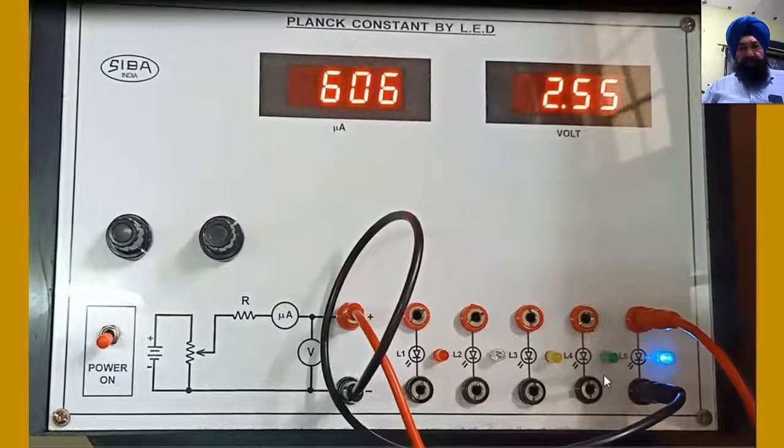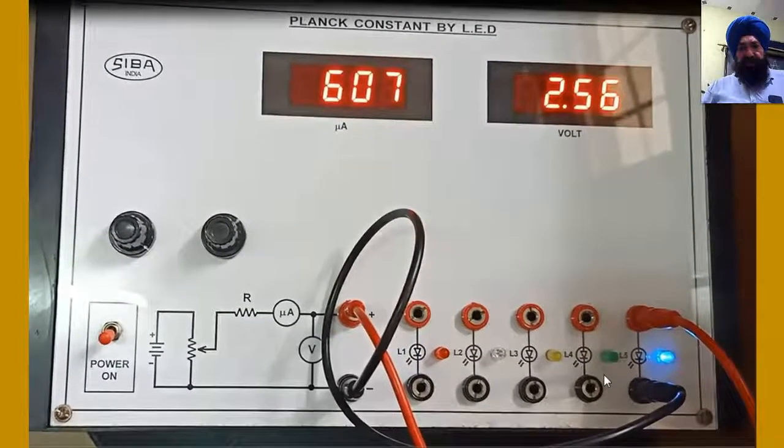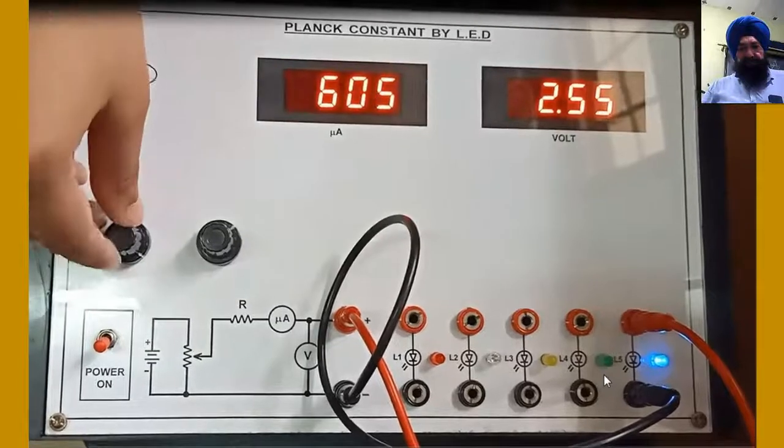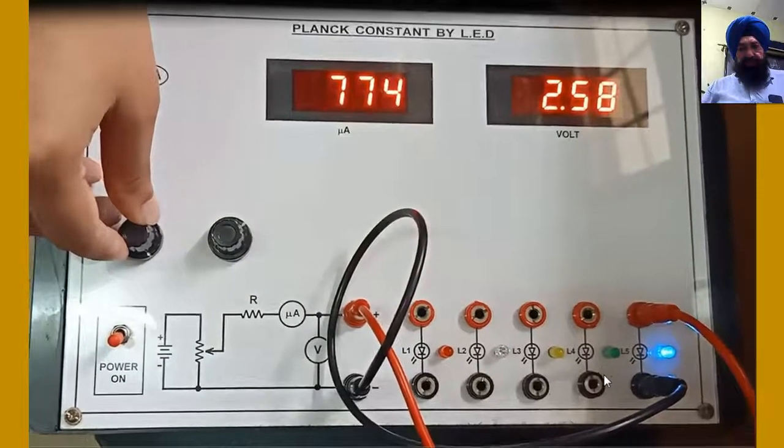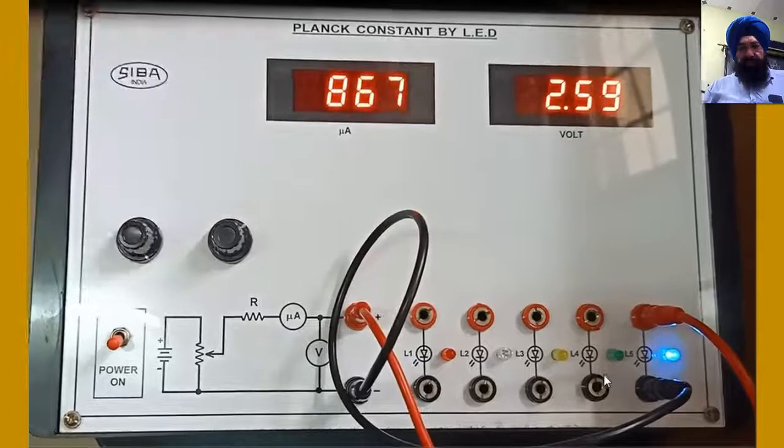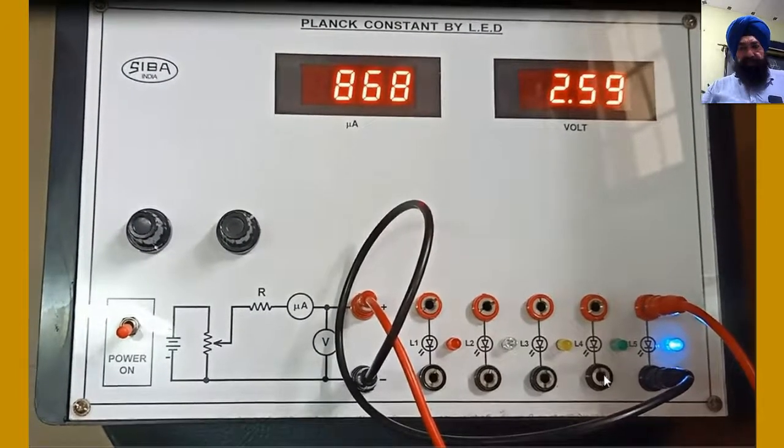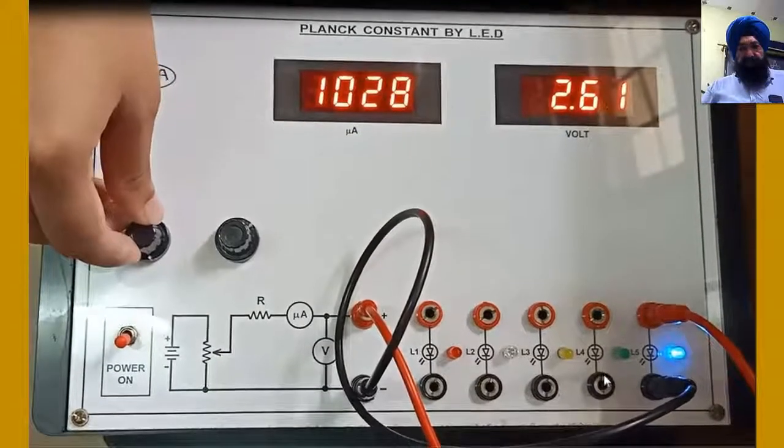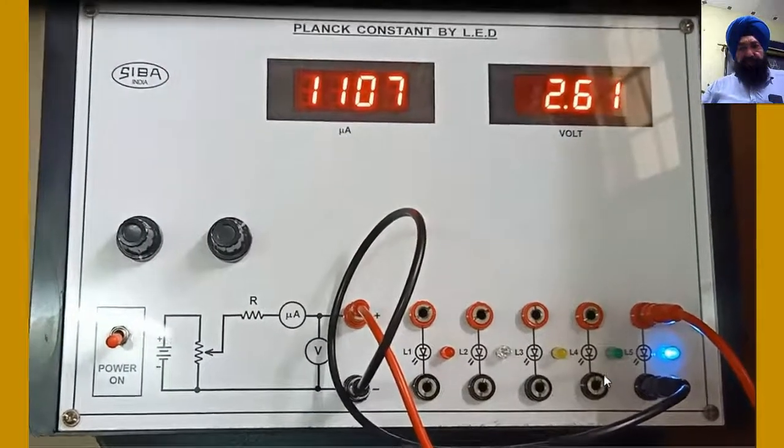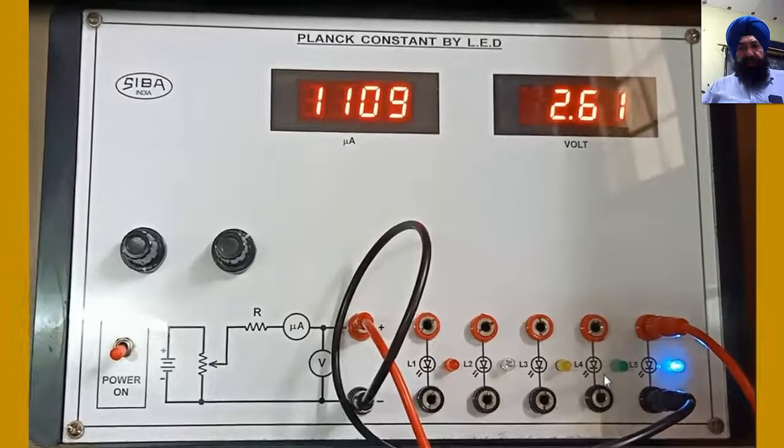Voltage 2.52, current 381 microampere. Voltage 2.55, current 606 microampere. Voltage 2.59, current 868 microampere. Voltage 2.62, current 1109 microampere.